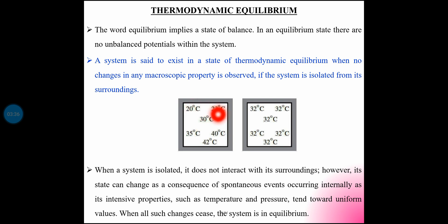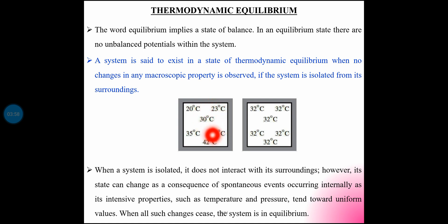For example, when one system is isolated at 20 degrees centigrade, the system is in a state of Thermodynamic Equilibrium. A system is in a state of Thermodynamic Equilibrium if the conditions for the following three types of equilibrium are satisfied: Mechanical Equilibrium, Thermal Equilibrium, and Chemical Equilibrium.